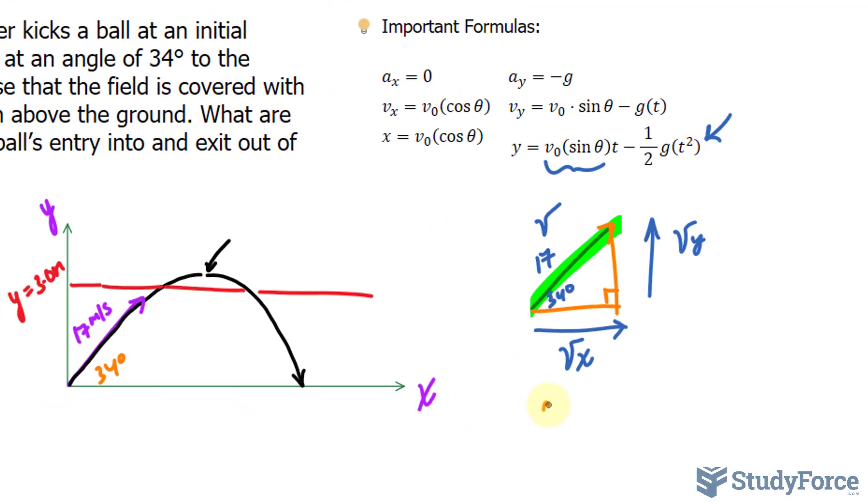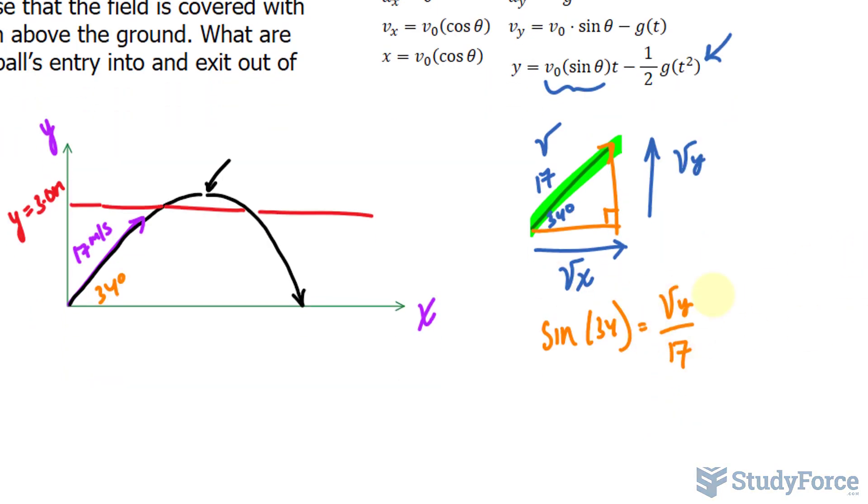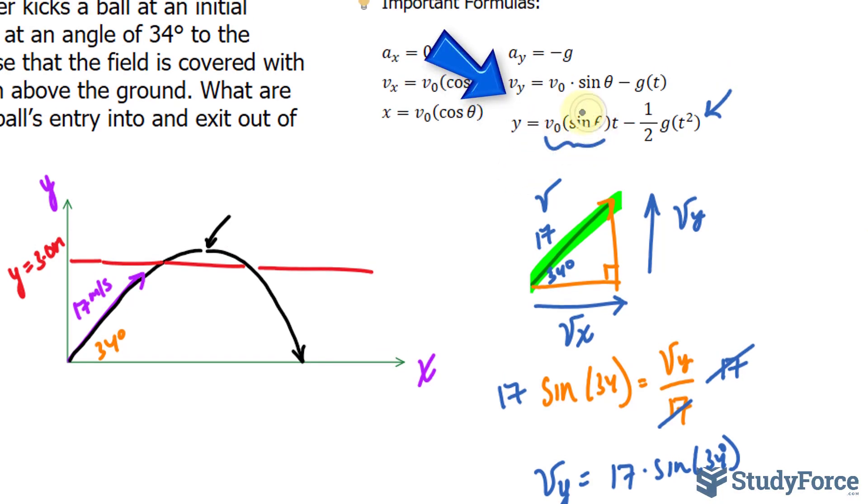So using sine, I can write down sine 34 equals opposite, which is v_y, over the hypotenuse of 17. Remember, sine is a comparison of opposite to hypotenuse. Solving for v sub y by multiplying both sides by 17, this and this cancel out, and we have v sub y is equal to 17 times sine 34. You can actually find out what this value is, it will give you a number, but I like to keep it like this because it's easier to work with.